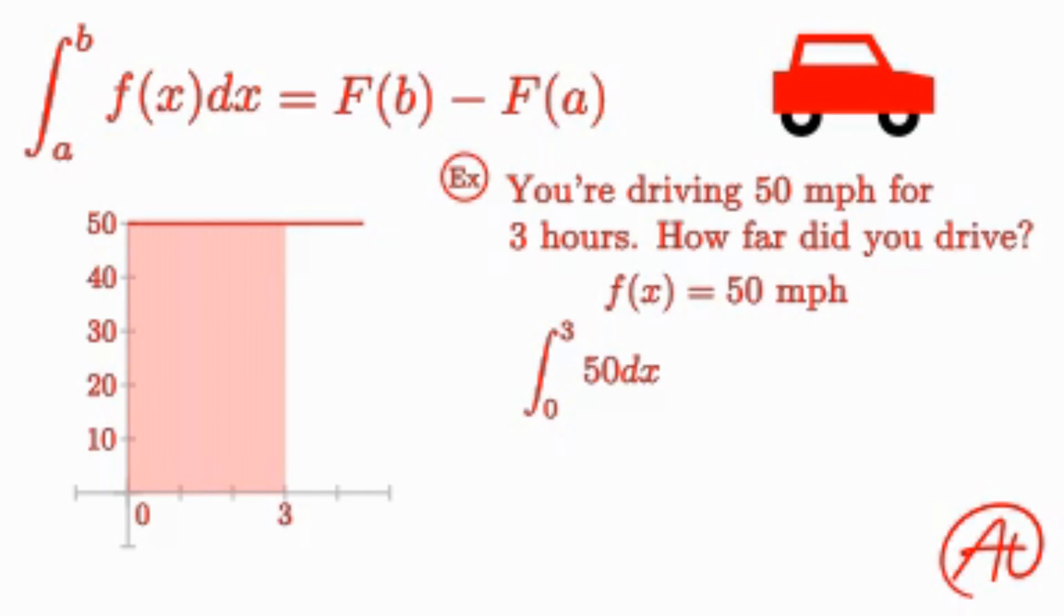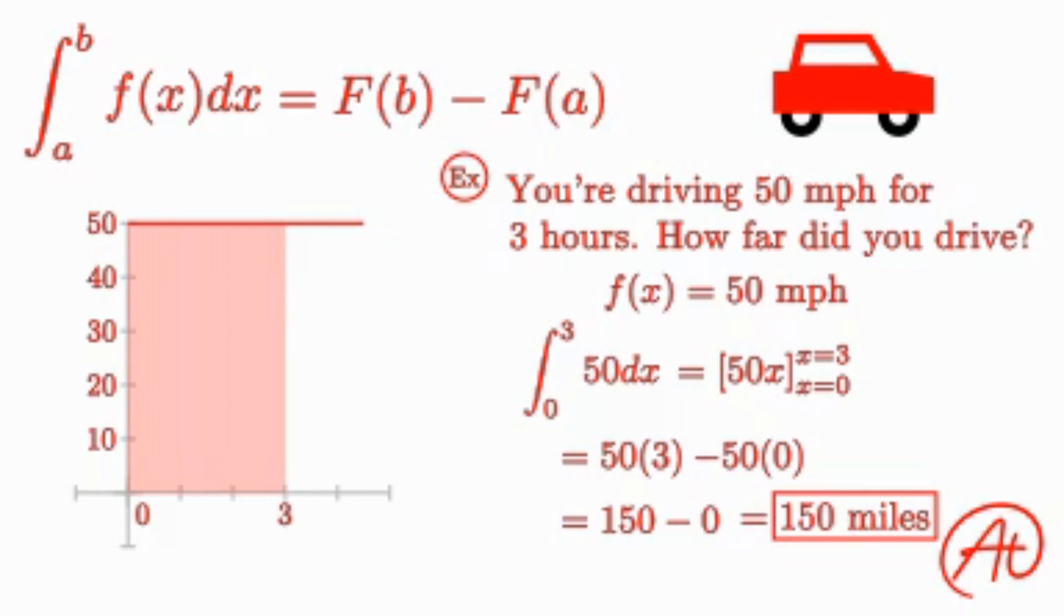So first, let's once again find our antiderivative. Since our function is 50, we find that the antiderivative is 50x. Plugging in our upper and lower bounds, we get 50 times 3 minus 50 times 0, or 150 minus 0, which equals the 150 miles many of you intuitively knew from the beginning.